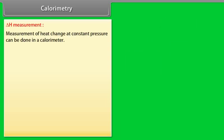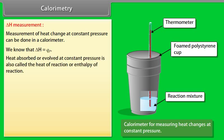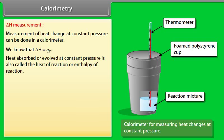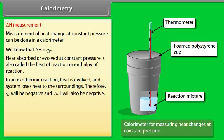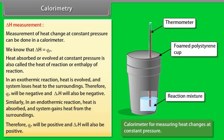Delta H measurement: Measurement of heat change at constant pressure can be done in a calorimeter. We know that delta H equals QP. Heat absorbed or evolved at constant pressure is also called the heat of reaction or enthalpy of reaction. In an exothermic reaction, heat is evolved and the system loses heat to the surroundings, so QP and delta RH are both negative. In an endothermic reaction, heat is absorbed, so QP and delta RH are both positive.